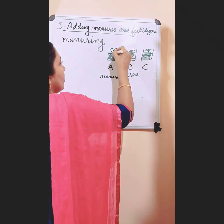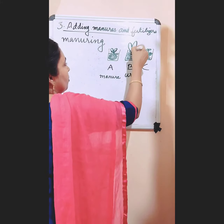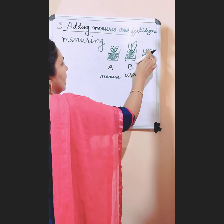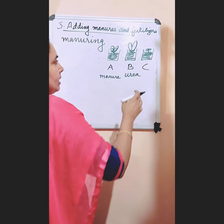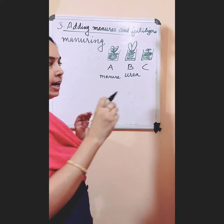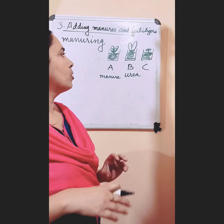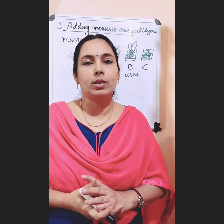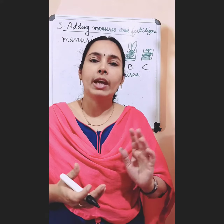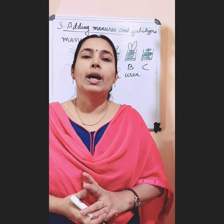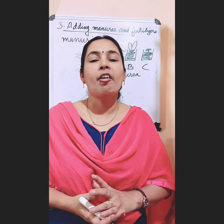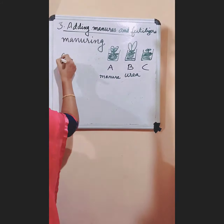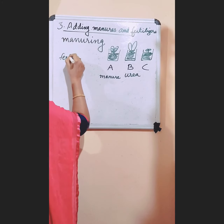The plant in B shows better growth, and the plant in glass C is unhealthy. So why does the plant in glass B show better growth? Because we added urea, and this urea is a fertilizer. So urea is a fertilizer.